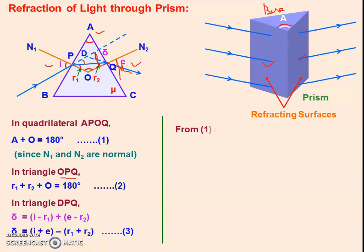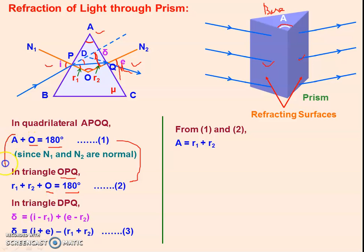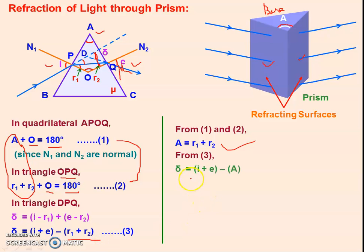From equations 1 and 2, comparing the right-hand sides, both equal 180 degrees and both have O on the left-hand side. So we can get A equals R1 plus R2. Substituting R1 plus R2 equals A into the third equation, we get δ equals I plus E minus A.